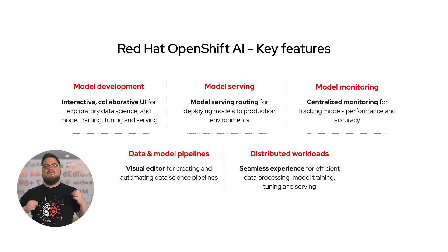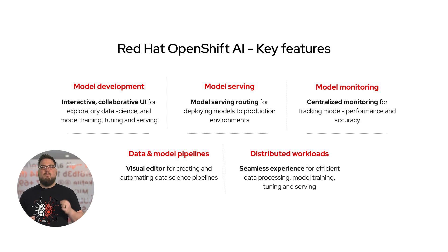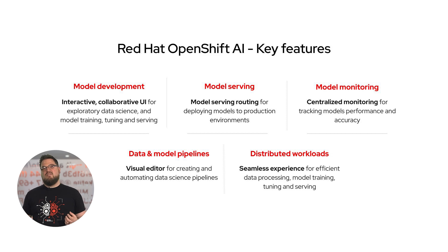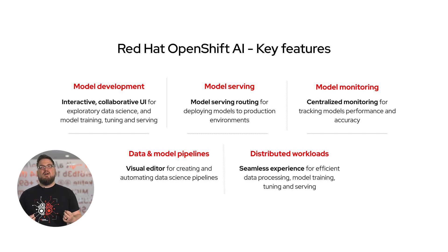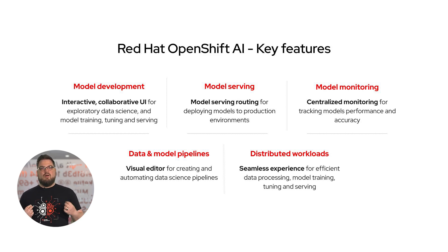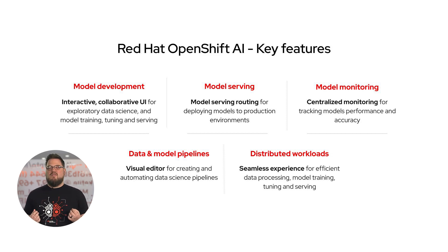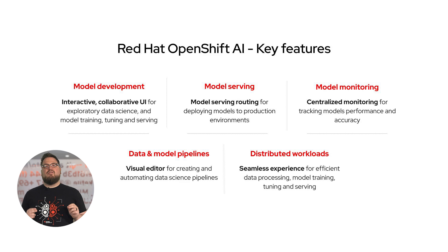This leads us to the five pillars of what makes up OpenShift AI. We have model development — using tools like notebooks to do your experimentation phases and ultimately train your models in a collaborative way across multiple teams. Once that's finished, being able to serve your model or infer your model where you need it. It could be within your cloud ROSA instance running in AWS, or it could be even at the edge. You get to pick where your models are deployed.